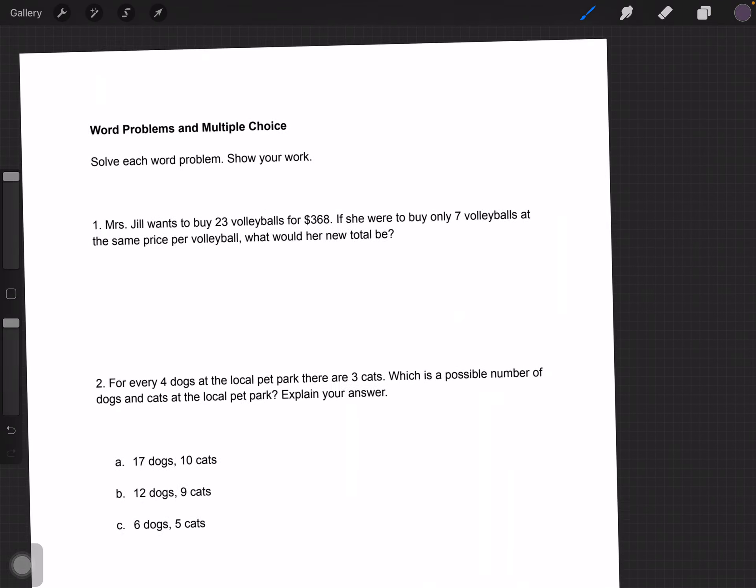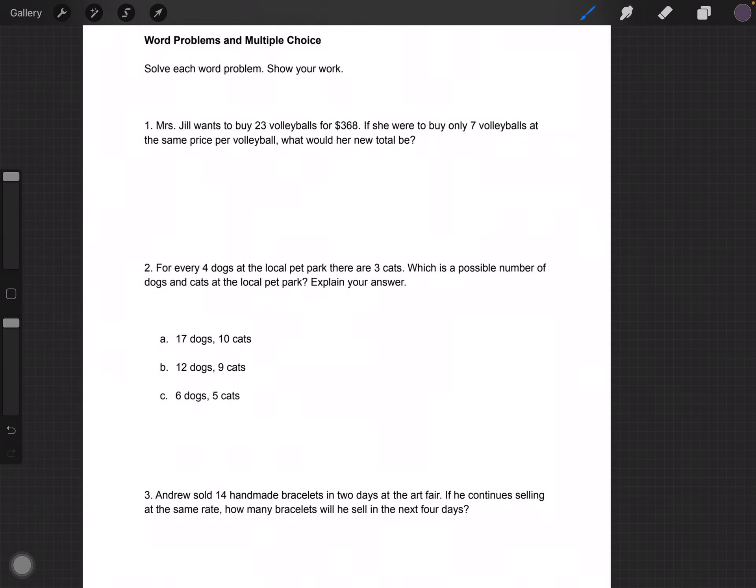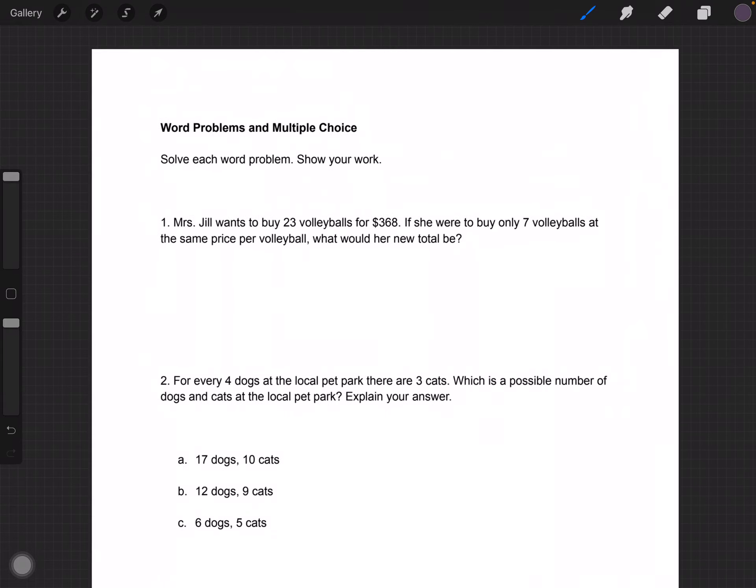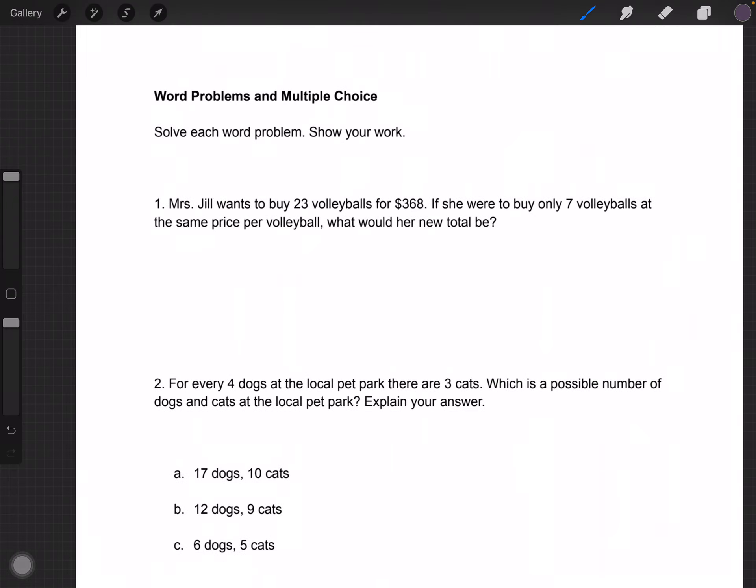Moving on, we have some word problems. I'm going to do two. There's two pages of them. This one says, Miss Jill wants to buy 23 volleyballs for $368. If she were to buy only 7 volleyballs at the same price per volleyball, what would her new total be?